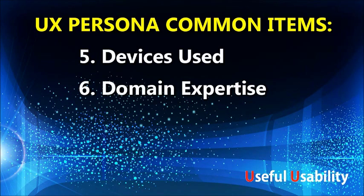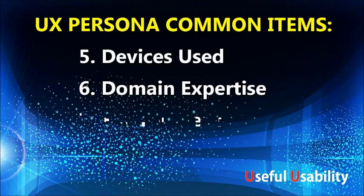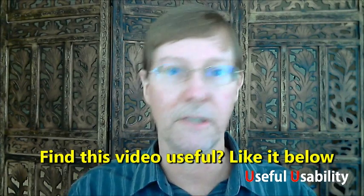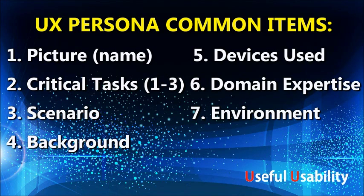Number six is domain expertise — we need to find people who match the personas from a domain expertise standpoint. Number seven is the environment: what devices are being used, is this an office environment only, or might it be used on a train, plane, or car? That environmental information is very handy when putting together UX research and usability testing. Those are the seven common types of data present in UX research and usability testing personas — who we're recruiting, what we're testing, why we're testing it, and that the results are valid.